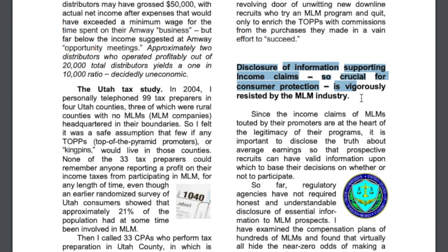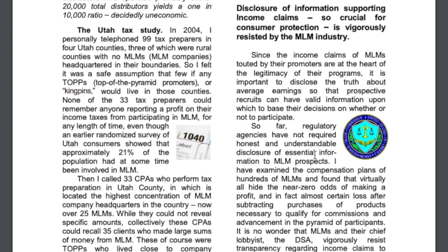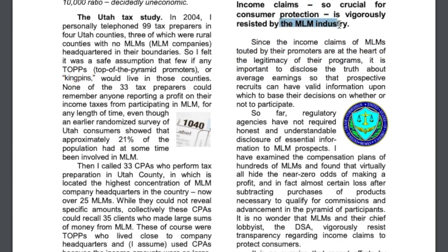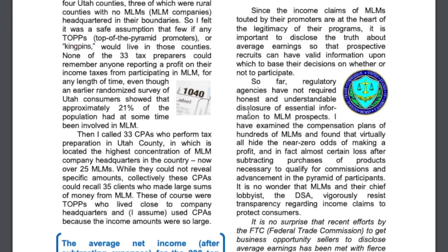This part is really interesting. He basically details why disclosure of information supporting income claims is incredibly important. This is one of the big reasons why I made the Authentic or Charlatan series is because I want to promote transparency. Transparency is so all consumers know the details and know what they're signing up for, and he's basically claiming that since the income claims of MLM tattled by the promoters are at the heart of the legitimacy of the programs, it is important to disclose the truth about average earnings, but the reason why the MLM industry is vigorously resisting this is simple, because they have something to hide. They don't want people to know that nearly everyone loses money.